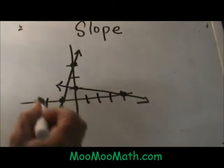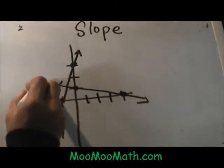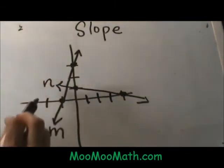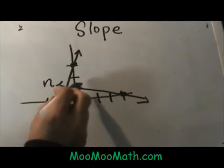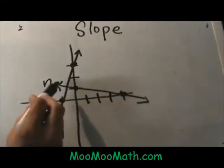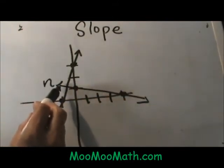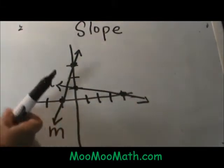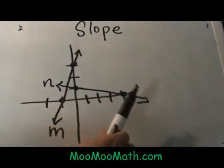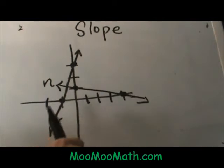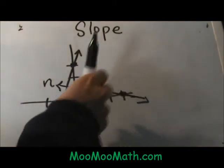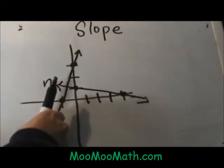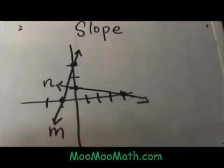Let's look at our second line over here. We'll call this line N for Nancy. Line N is this line right here. As you move from left to right the line is sloping down. Think of this as reading — when you're reading from left to right it's going up, and from left to right the second line is going down. Now to define the slope it's fairly simple.